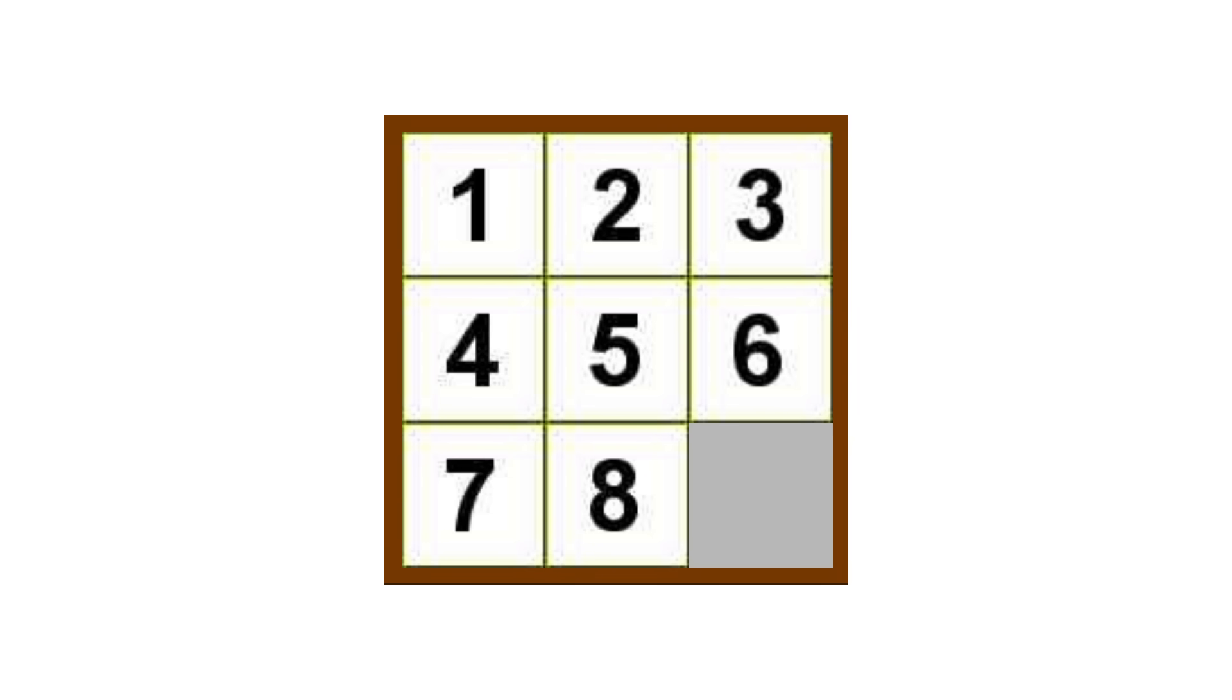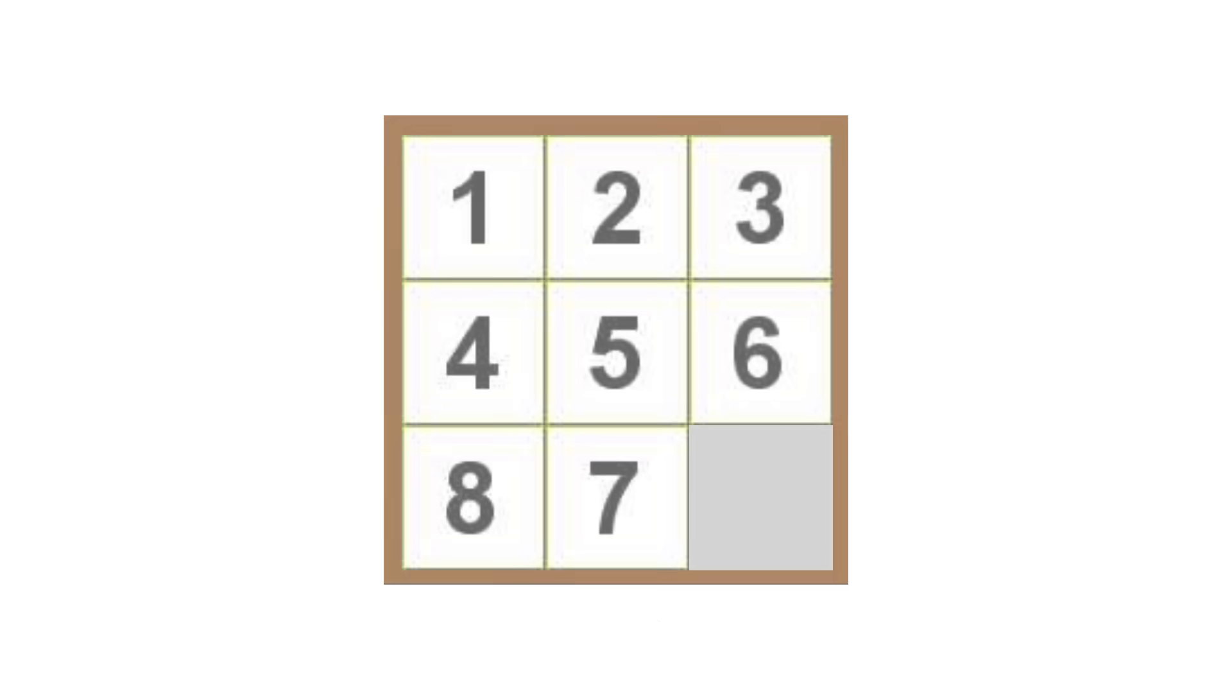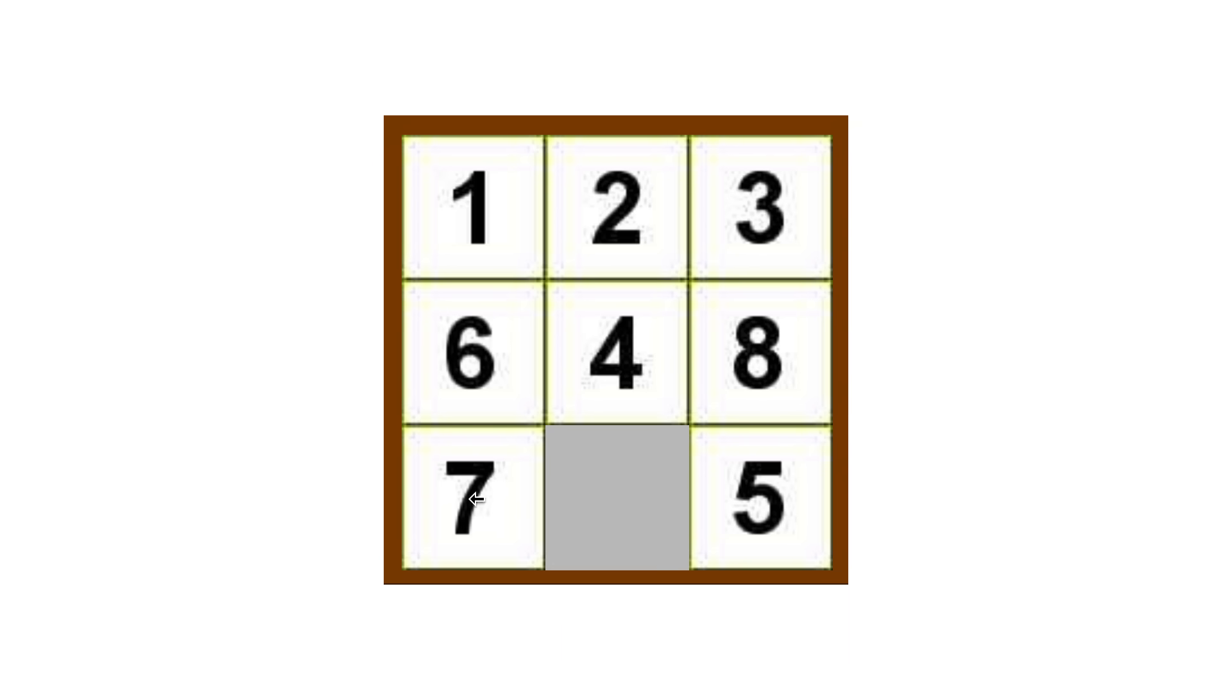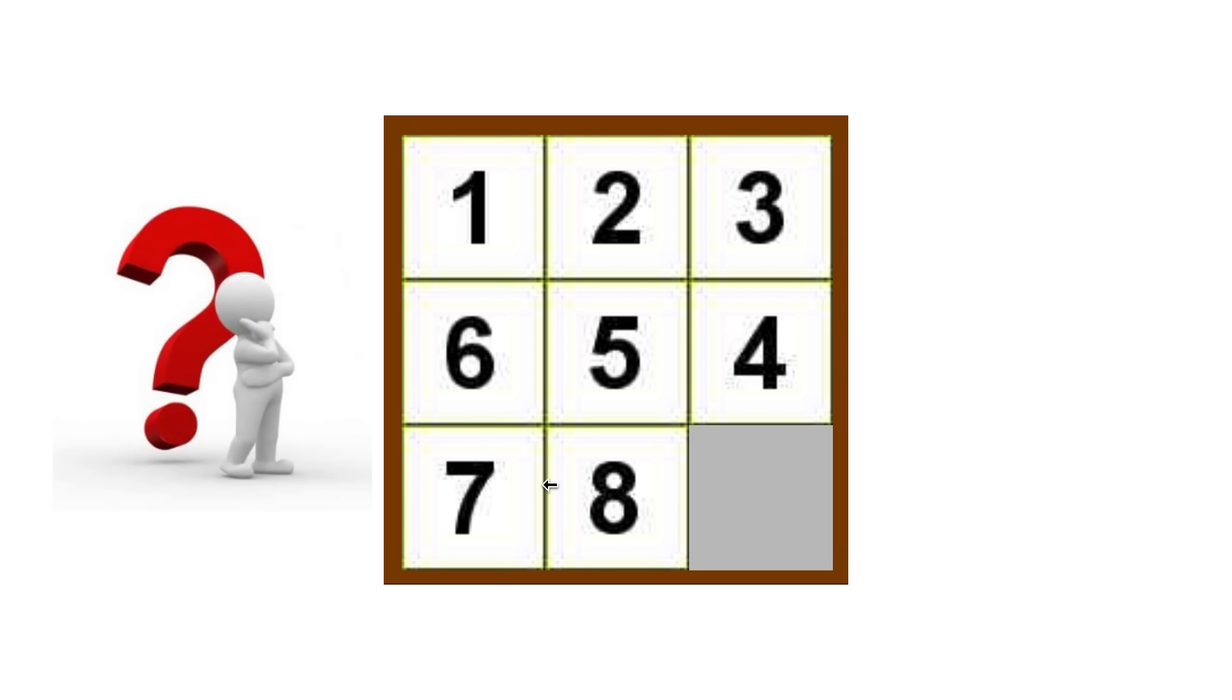The question for us is if you were to switch these last two tiles, is this still possible to get back to the correctly ordered configuration? Can you logically prove whether it is or isn't? Now we'll get to the question of why would anyone need to know this, but for now just focus on the mathematical reasoning here.